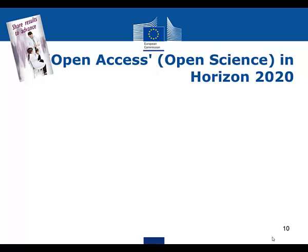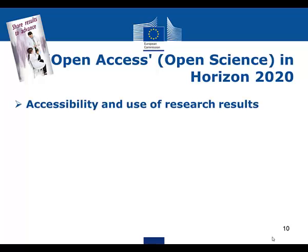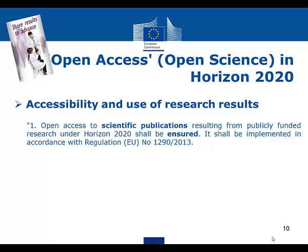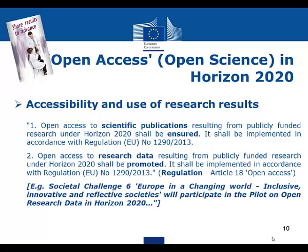Horizon 2020 is favouring a science open to society. The accessibility and use of research results are of the utmost importance for their responsible and efficient use in society. Open access to scientific publications resulting from publicly funded research under Horizon 2020 will be the rule. The open access to research data resulting from Horizon 2020 will be promoted — for example, Societal Challenge 6 will participate in the pilot on open research data in Horizon 2020. Science with and for Society will further develop the accessibility and use of the results of publicly funded research.